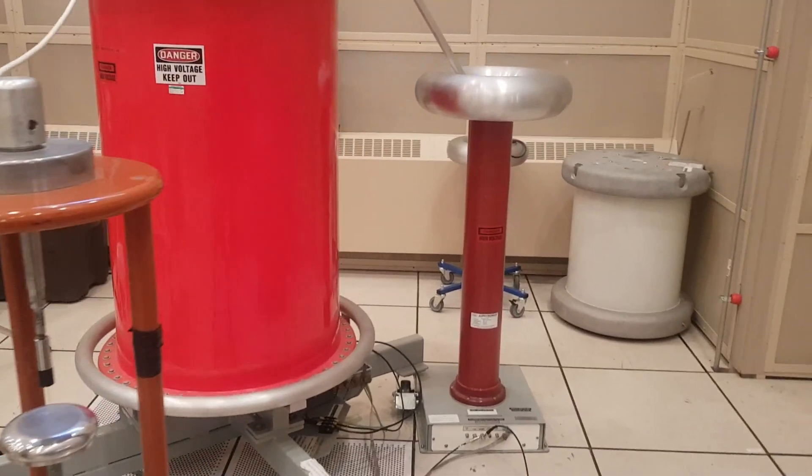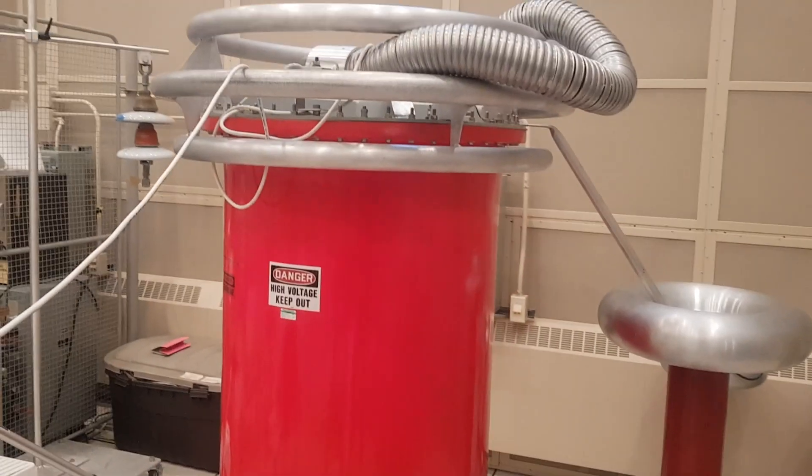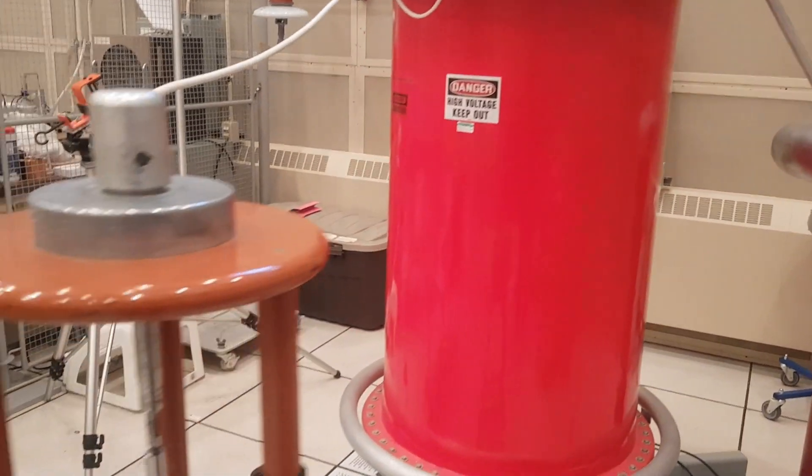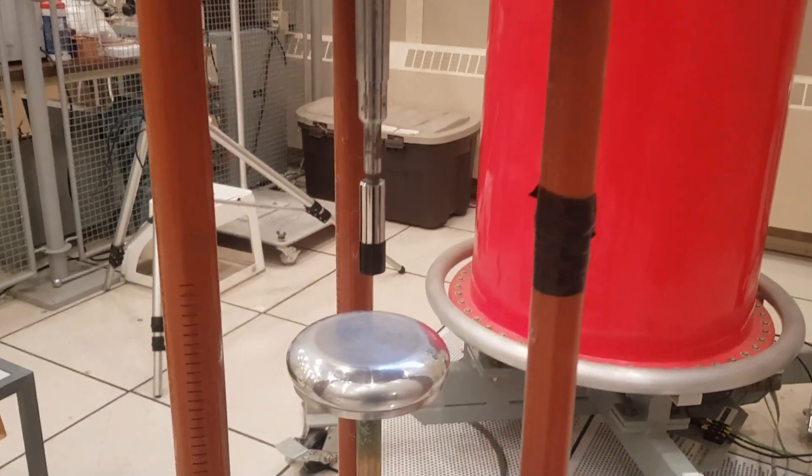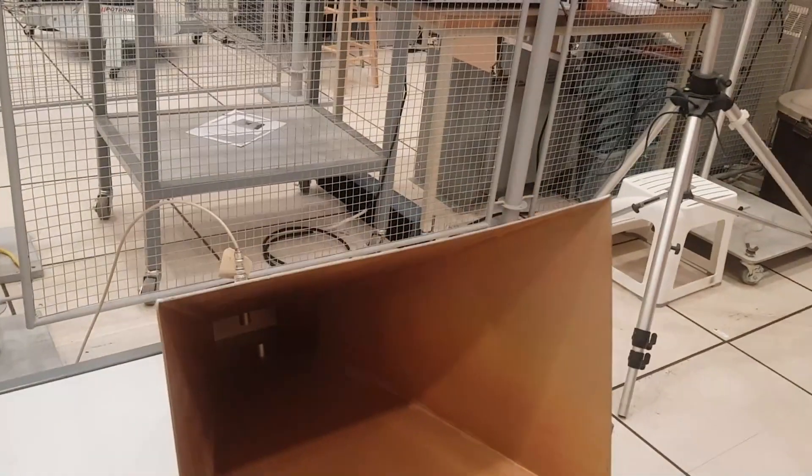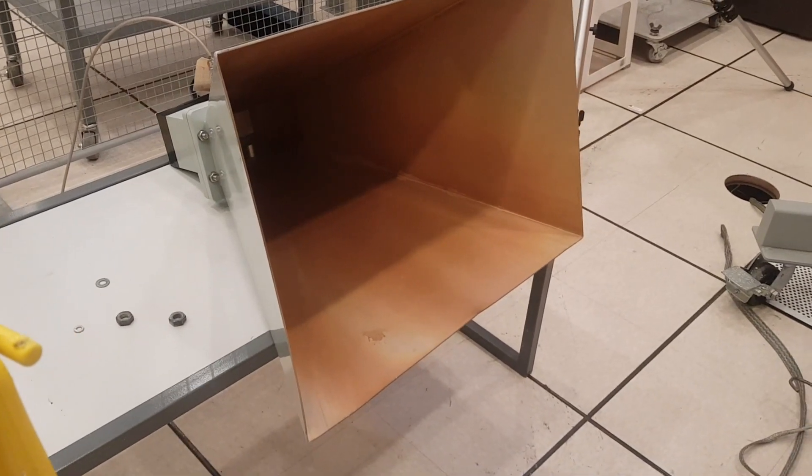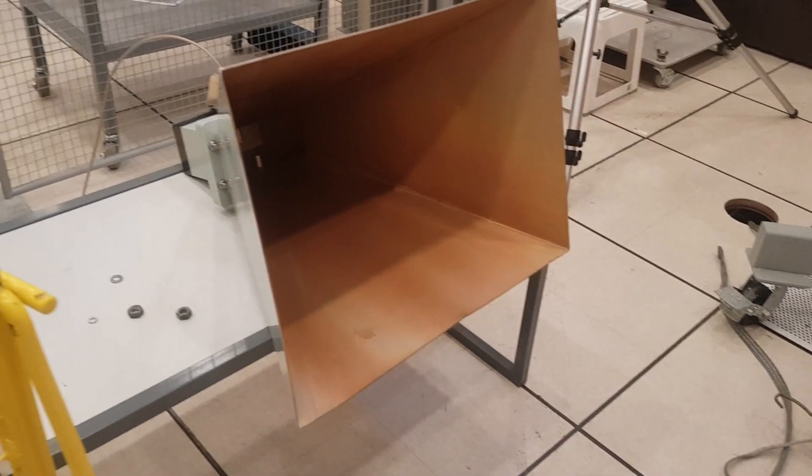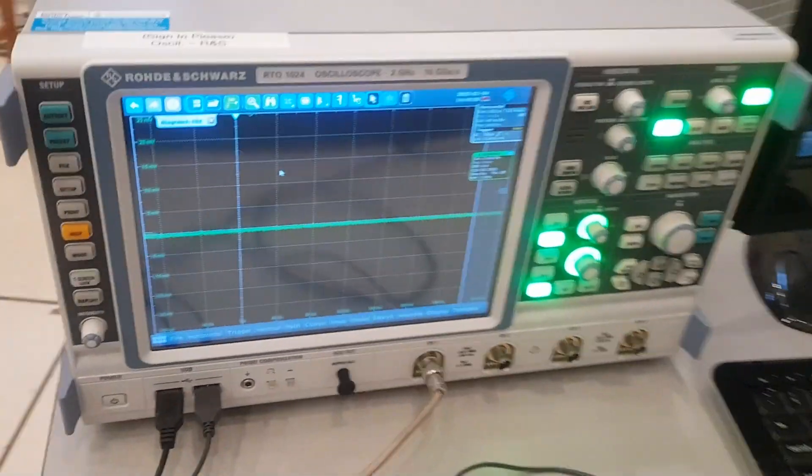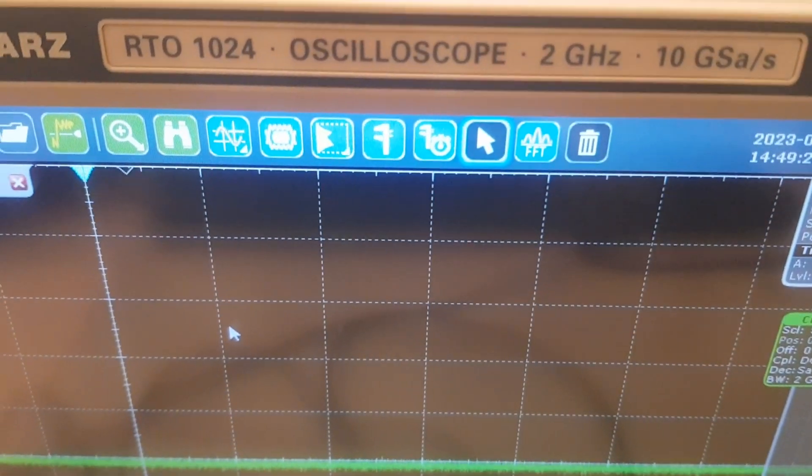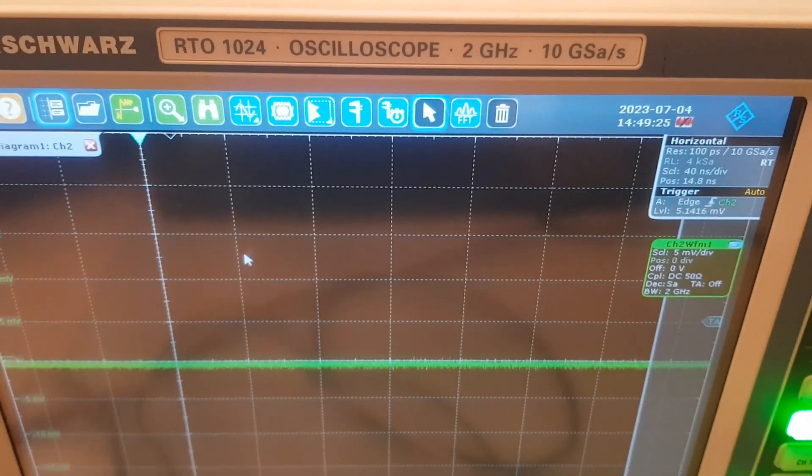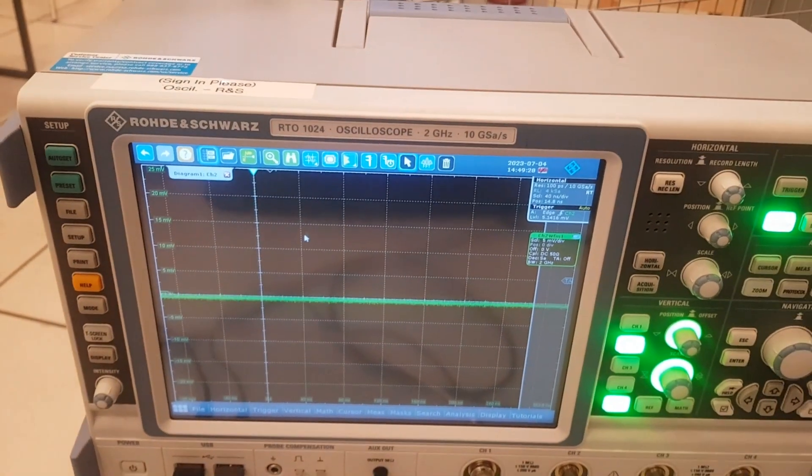This is the partial discharge setup. So here we have the 150 kV transformer connected to this cell, and this cell here connected to a sharp point. And then here we have the RF antenna. It's a directional antenna with a bandwidth between one to two gigahertz. Now the output of the antenna is connected to an oscilloscope with a bandwidth of two gigahertz. So the frequency of the oscilloscope and the antenna are matching.